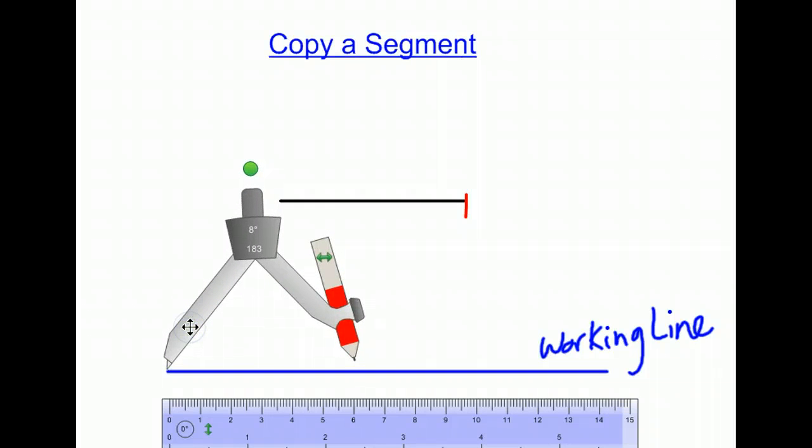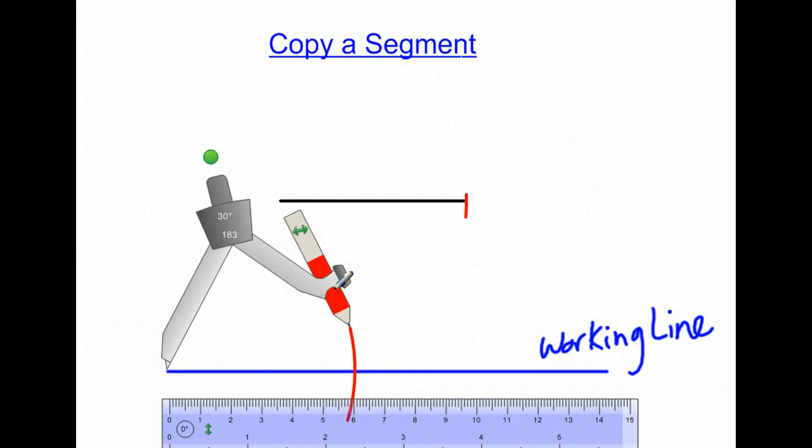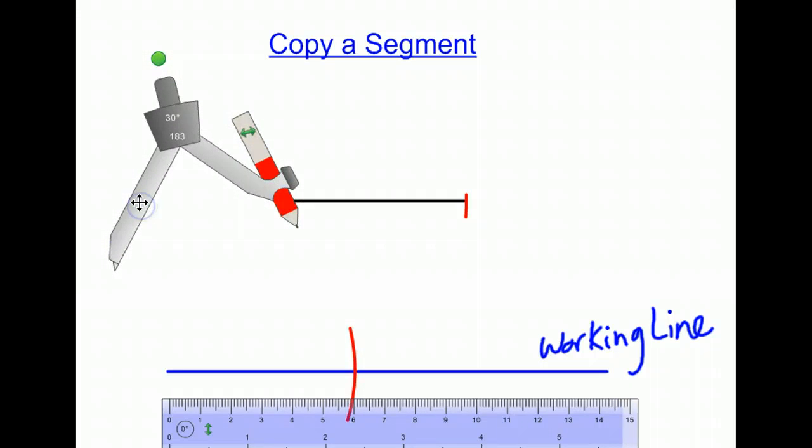Then come to one end of your working line using the same width without changing it and put an arc there. That's going to be the endpoint which demonstrates the copying of the segment from here to here.